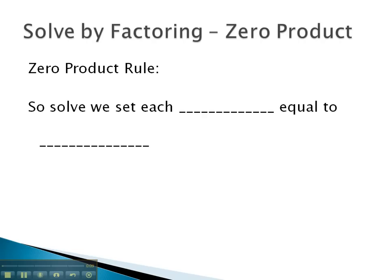What the zero product rule says is that if you're multiplying two factors and the answer is 0, the only way that's possible is if either the first factor, a, equals 0 or the second factor, b, equals 0.